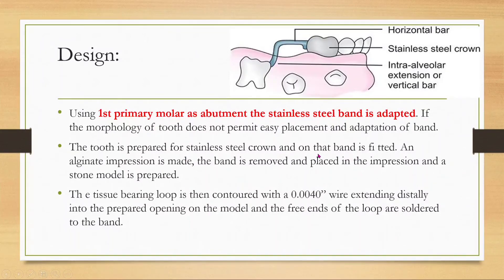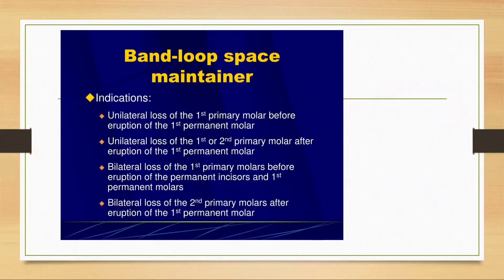The appliance is prepared by adapting a stainless steel crown, fitting a band, taking an impression, removing the band, and preparing a stone model. Indications include: unilateral loss of primary second molar before eruption of the first permanent molar; unilateral loss of first or second primary molar after eruption of the first permanent molar; bilateral loss of first primary molar before eruption of permanent incisors and first permanent molar; and bilateral loss of second primary molar after eruption of first permanent molar.